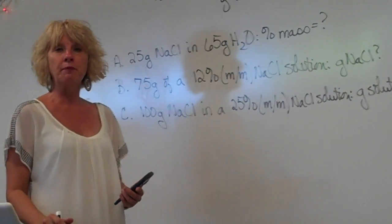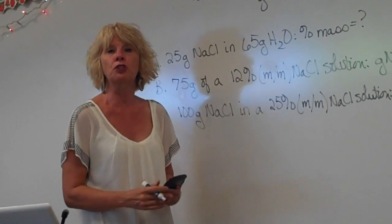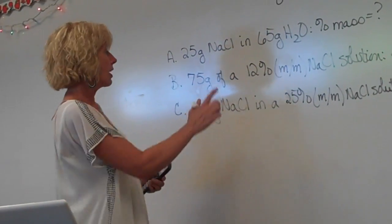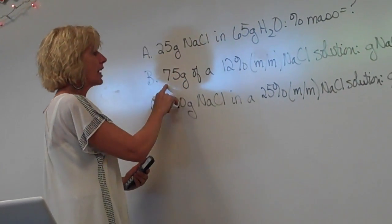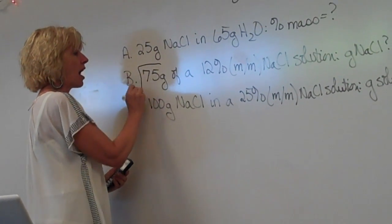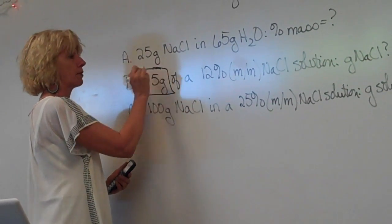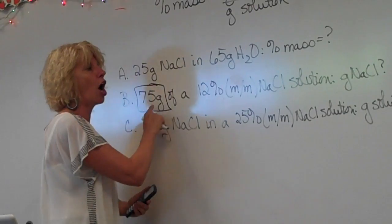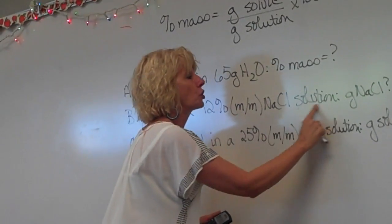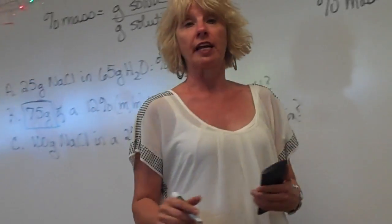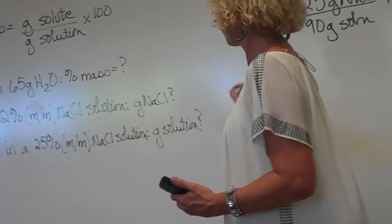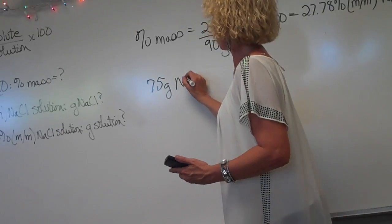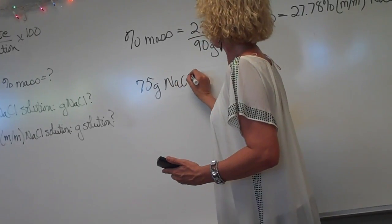To solve any problem in chemistry, what's the first thing we write down? The given. The given is going to be the 75 grams — it's never going to be the percent, it's going to be the grams of solution. So we have 75 grams of salt solution.